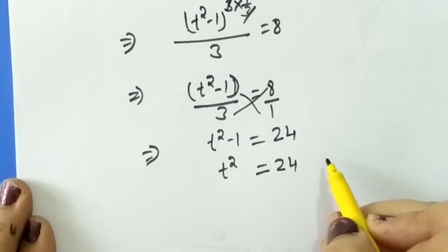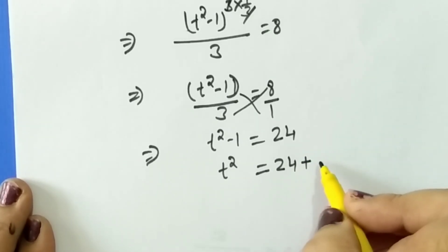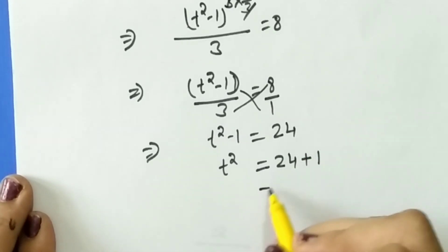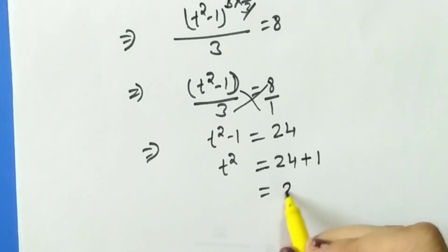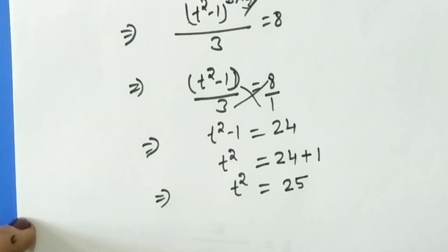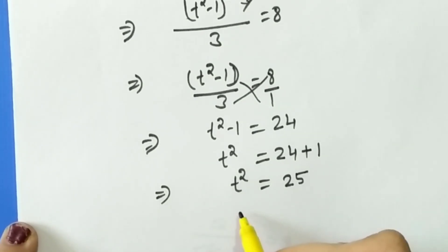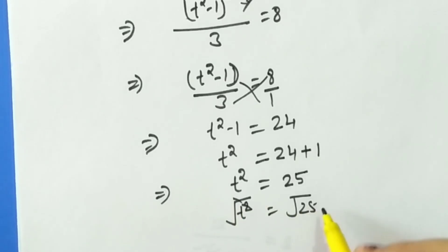Now t² is equal to 25. Taking square root on both sides, we get here square root and square cancel, so square root of 25 equals 5. So here t is equal to 5, and this is the value of t.